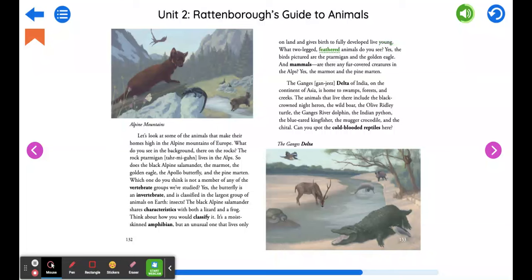What two-legged feathered animals do you see? Yes, the birds pictured are the ptarmigan and the golden eagle. And mammals, are there any fur-covered creatures in the alps? Yes, the marmot and the pine marten.